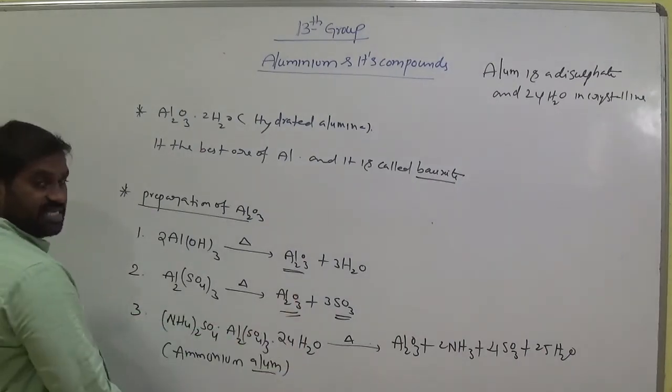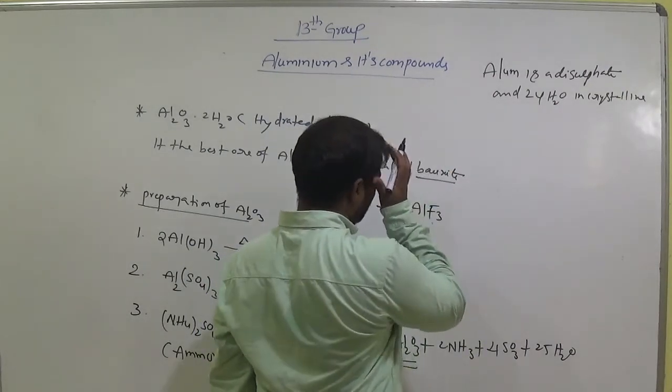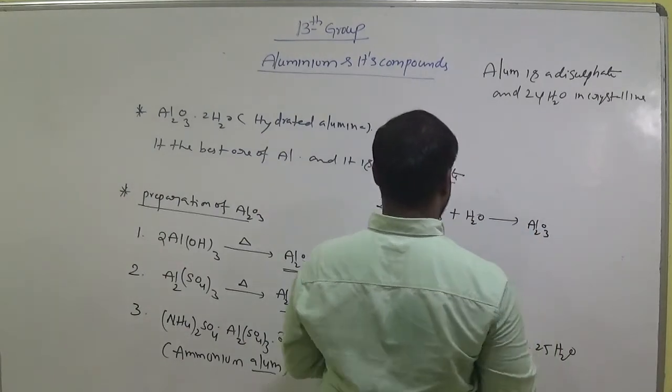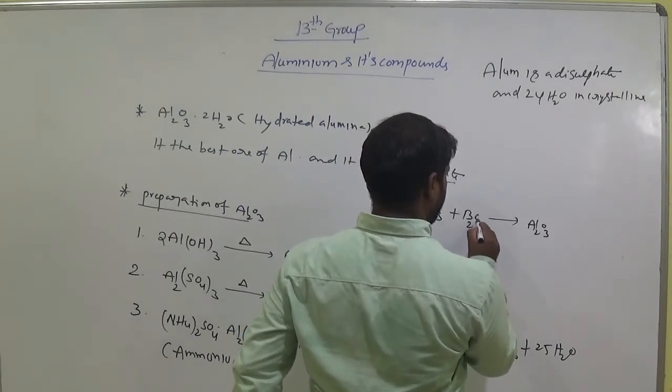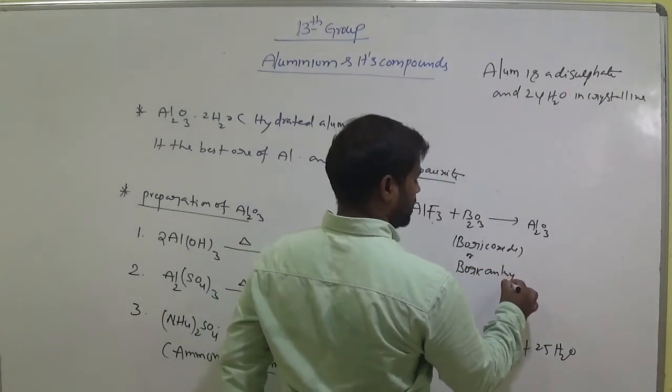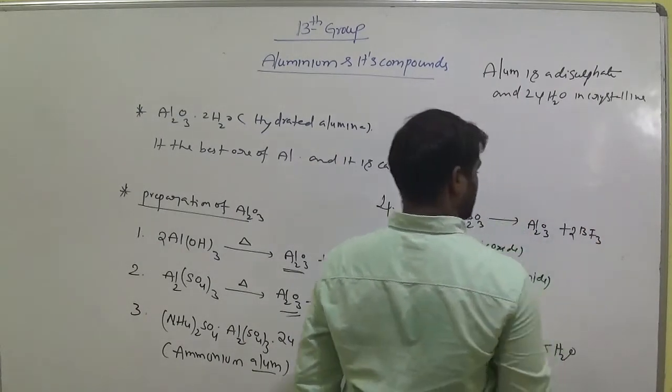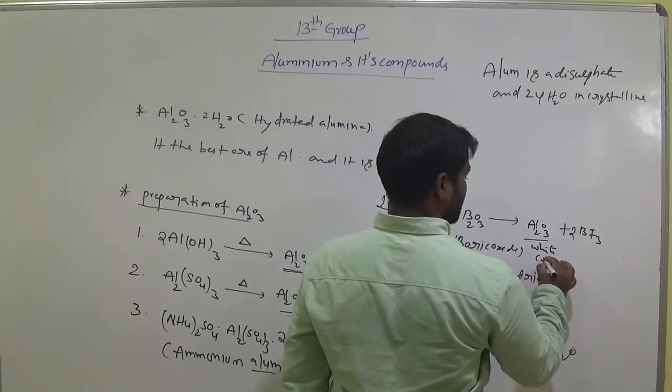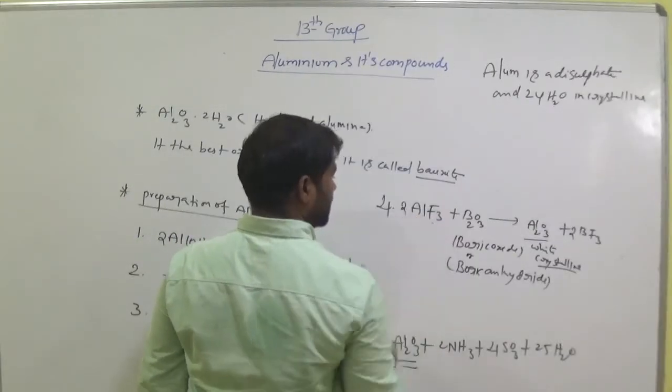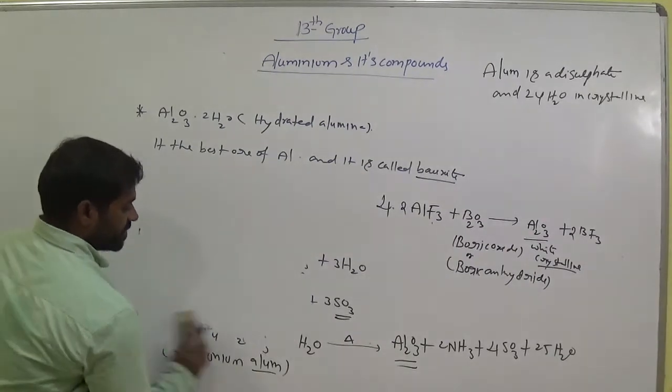25 moles of water is generated from alums. We can also prepare the Aluminium. Fourth preparation method from Aluminium trifluoride. Aluminium trifluoride is interactive with water and it produces Al₂O₃, that means Boric anhydride B₂O₃. What we call it is Boric oxide or Boric anhydride. Al₂O₃ and Boron trifluoride, here two moles Boron trifluoride and B₂O₃, this is white crystalline compound. Two moles of Aluminium, 3 oxygen, clear. These are the preparations of Al₂O₃, Aluminium.